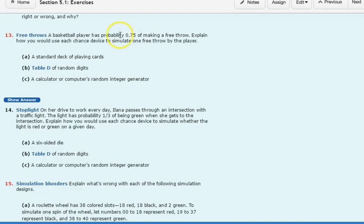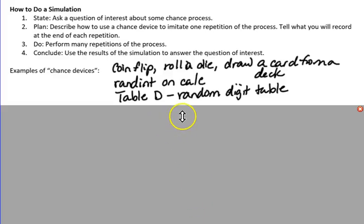Recognize that in each situation, you have to have 75% chance to make a free throw and 25% chance to not make a free throw. So you have to use the chance devices to imitate that probability. So how would we do that?